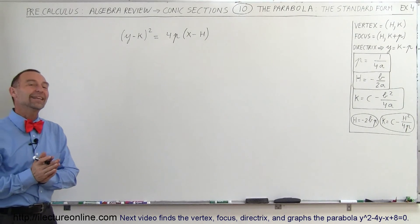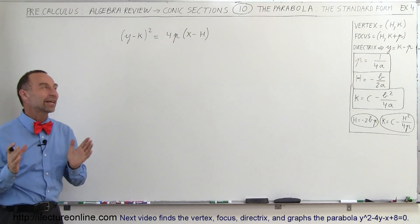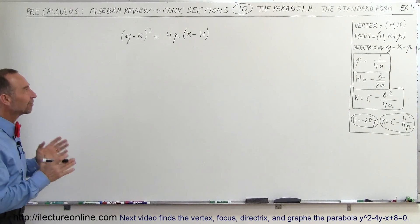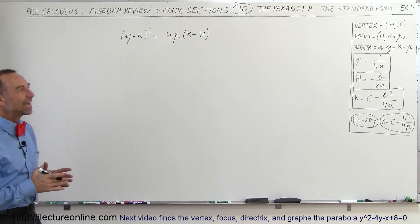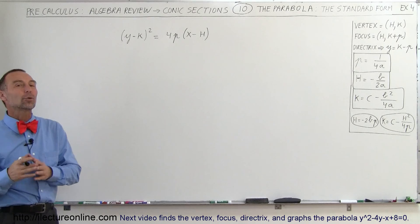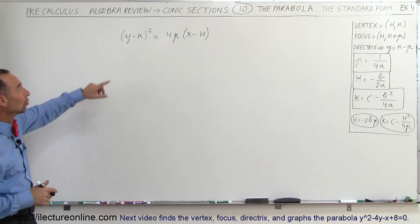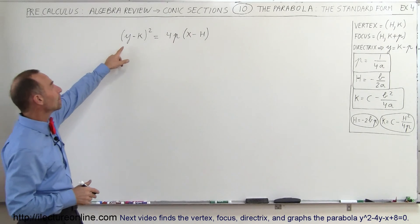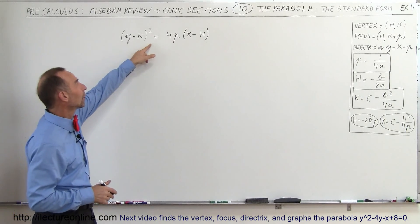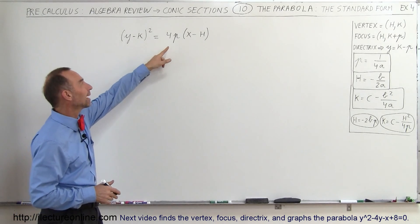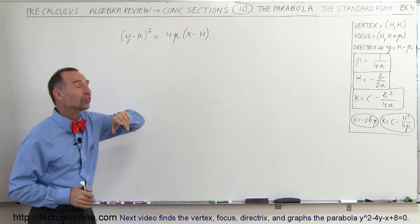Welcome to this lecture. We're going to take a look at a slightly different form of the standard equation — the standard form of the equation. Notice here we have y minus k squared equals 4p times x minus h.